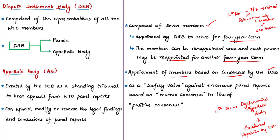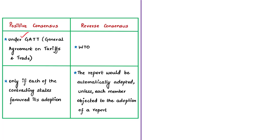The appellate body was set up in 1995 as a safety valve against erroneous panel reports based on a reverse consensus rule, in lieu of the previous positive consensus rule. Under the positive consensus rule used under GATT, reports could be adopted only if each contracting state favored its adoption — effectively giving a veto to the losing state. Under the current reverse consensus rule, a report is automatically adopted unless any member objects. Reverse consensus is slightly more advantageous than positive consensus.